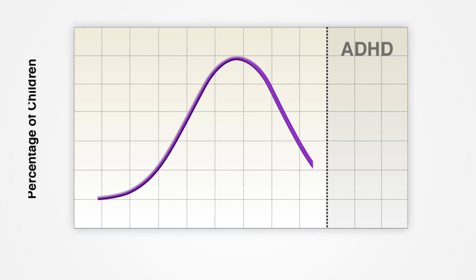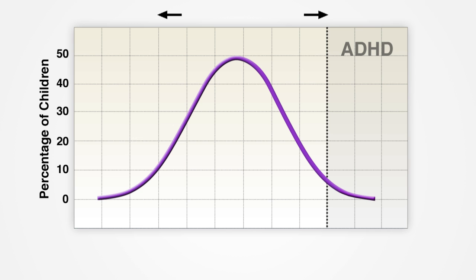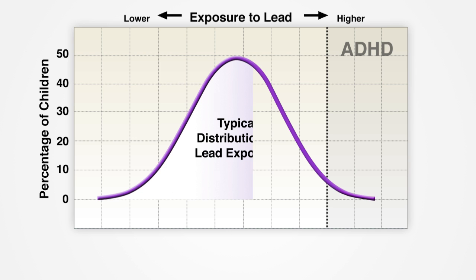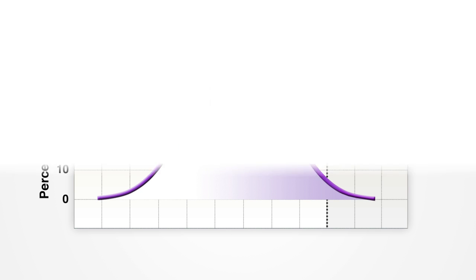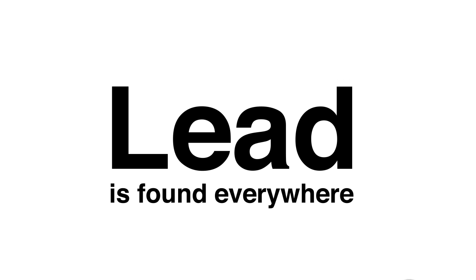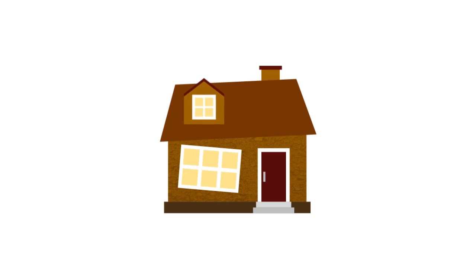This curve looks at the total population of children, but some children, like those who are exposed to lead, are at higher risk for ADHD. Lead is found everywhere, but some children are at higher risk for lead exposure, like children who are exposed to lead in older housing or plumbing.